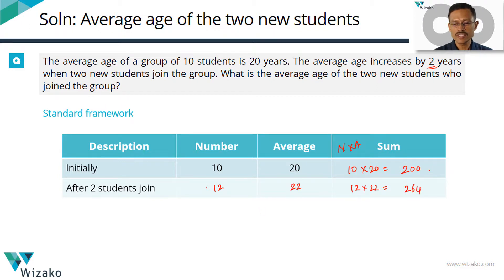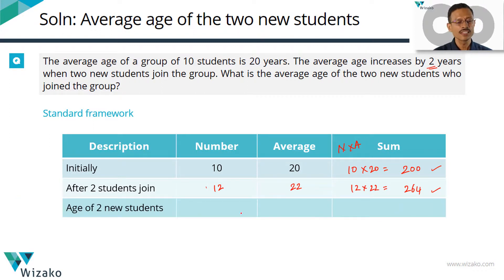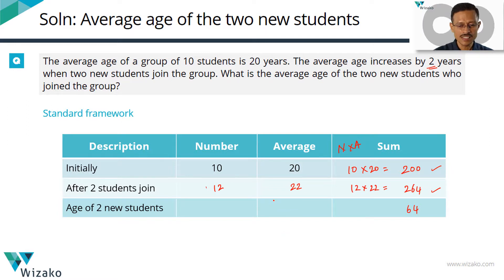So 10 students initially had a sum of ages equal to 200. All 12 students with the two new students having joined them have a sum of ages equal to 264. The additional 64 years — that is 264 minus 200 — is the combined age of the two new students. Their average age is their sum divided by 2, which equals 32 years.